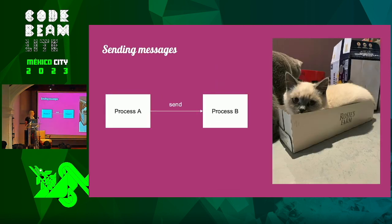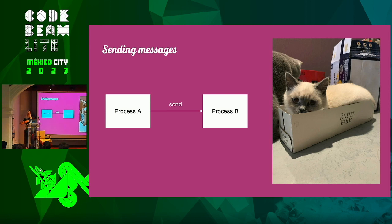In Elixir, the most basic way of sending a message from one process to another is 'send.' It's pretty simple — it requires a destination and a message. It's pretty much like putting a cat in a box, handing it over to someone else. They open that box and they get a cat. Now, of course, the process that's receiving the message has to do something as well, which you do with 'receive.' That's how you specify how to handle getting this message.